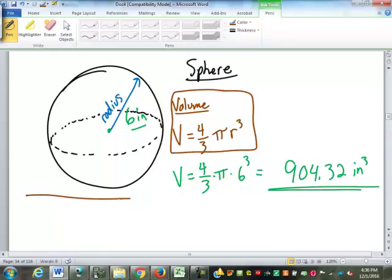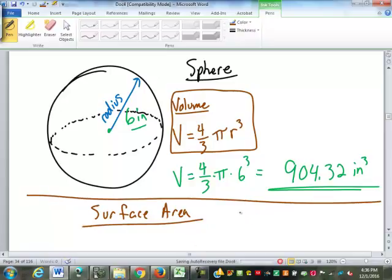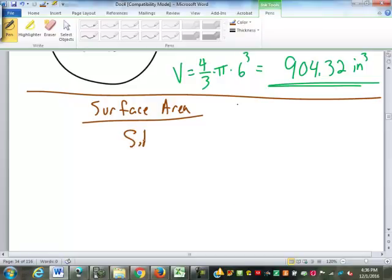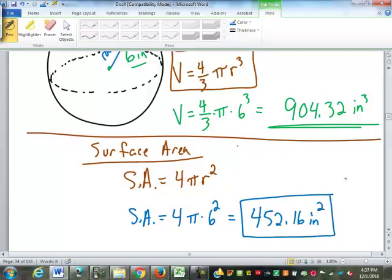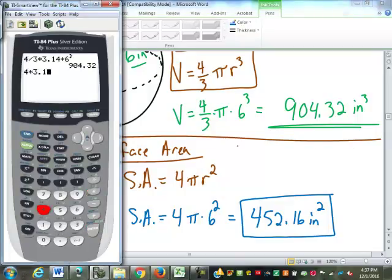That was measured in inches, so this is going to be in inches cubed. So that is the formula for volume. For surface area, the surface area of a sphere is four times pi times the radius squared. So for this sphere, our surface area is four times pi times six squared, which would be 452.16.